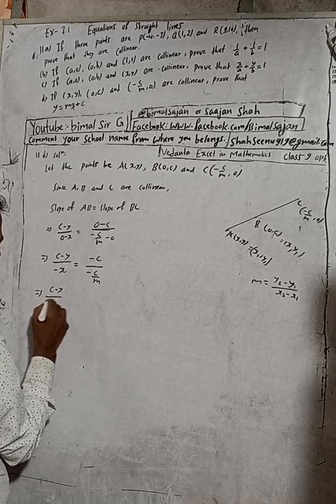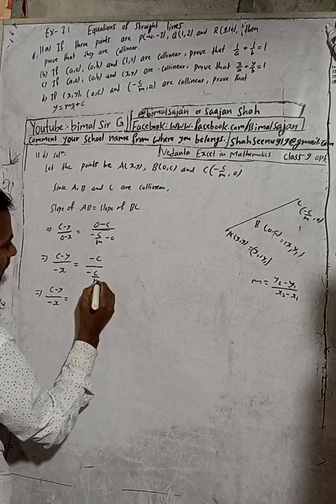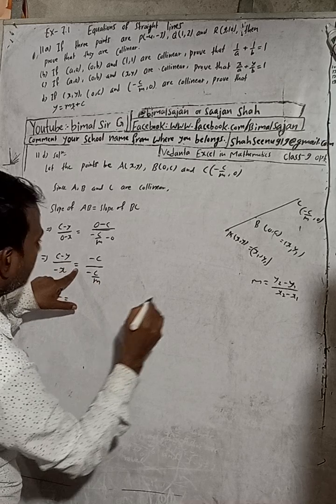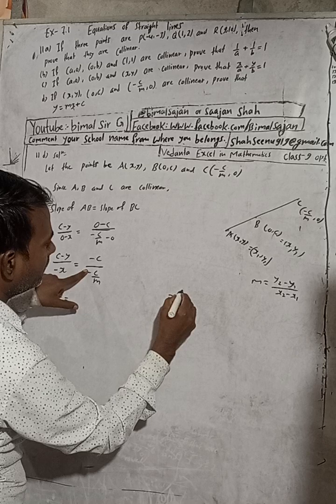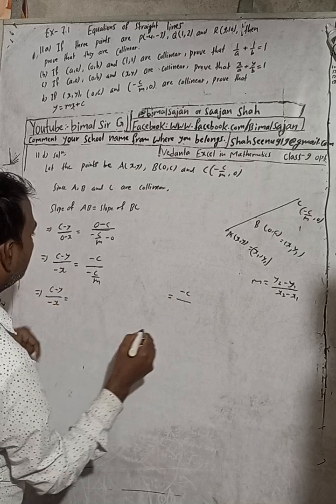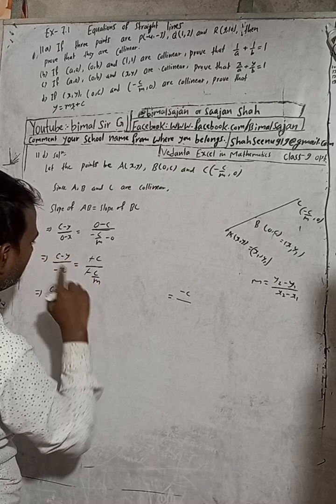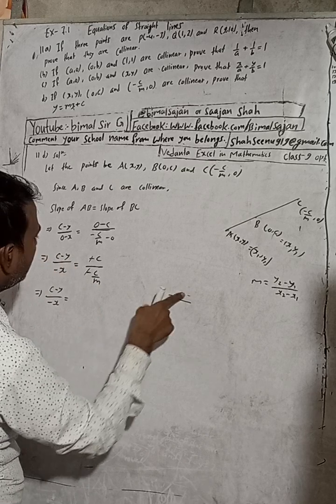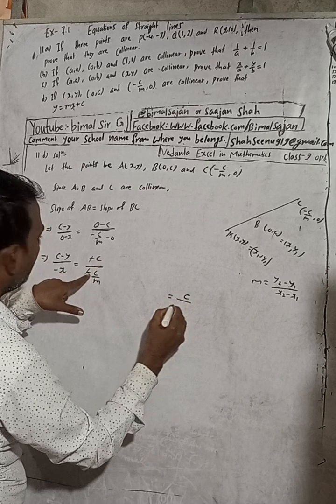(c - y)/(-x) = (-c)/(-c/m). The negative signs cancel, leaving (c - y)/x = c/(c/m).